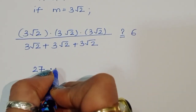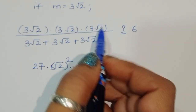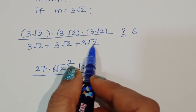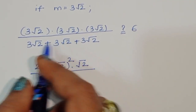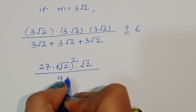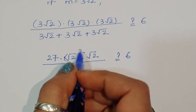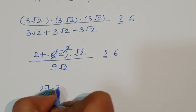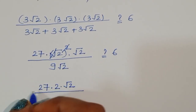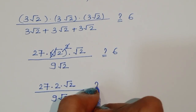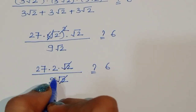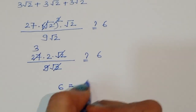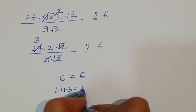The denominator is 3 plus 3 plus 3 equals 9, times √2, giving 9√2. So we have 27 times 2√2 divided by 9√2. Cancelling √2 from numerator and denominator, we get 27 times 2 divided by 9, which is 54 divided by 9, equals 6. So LHS equals RHS, confirming m equals 3√2 is a correct solution.